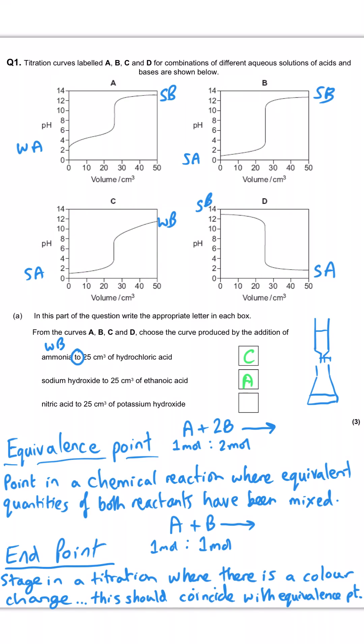And then last of all, we're this time adding nitric acid, a strong acid, from the burette to 25 cm cubed of sodium hydroxide, which is the strong base. So that's why we've got these two curves D and B. They're both strong acid, strong base combinations, but we are adding the acid from the burette to the sodium hydroxide. And so we're going to be finishing at an acidic pH, which is going to be D.